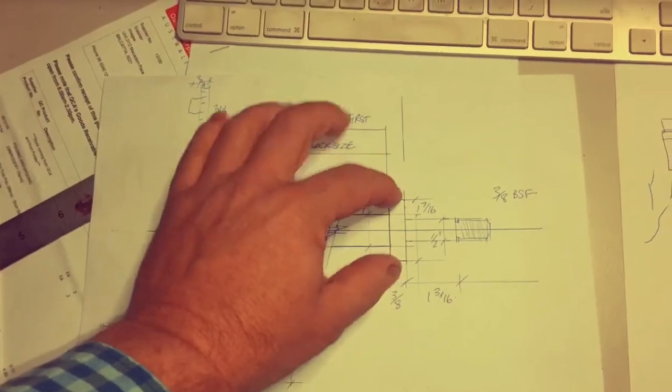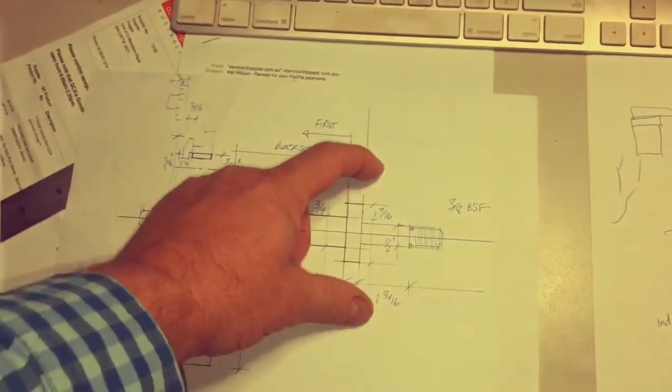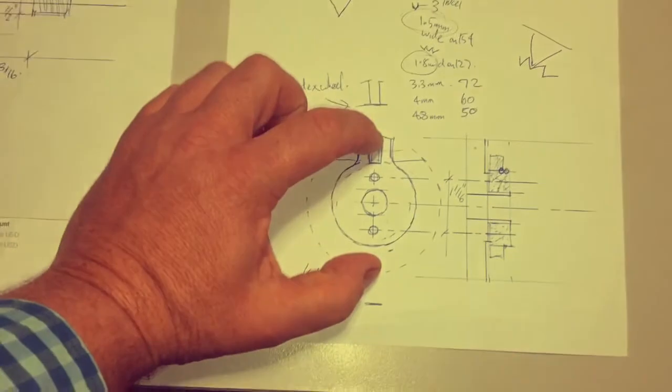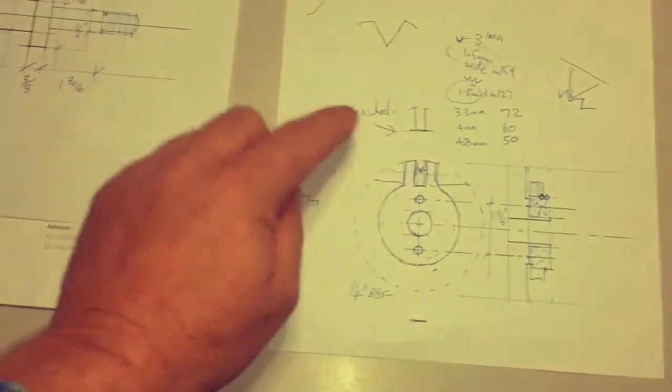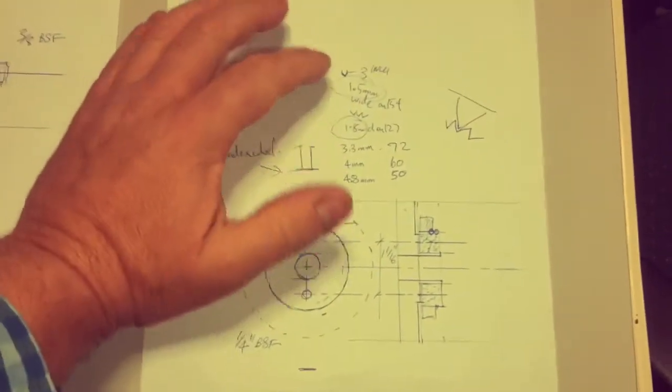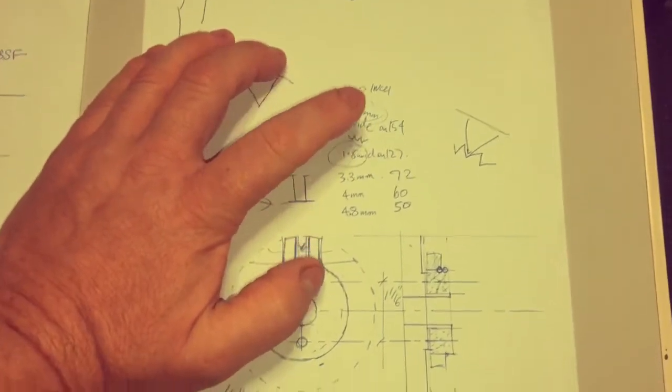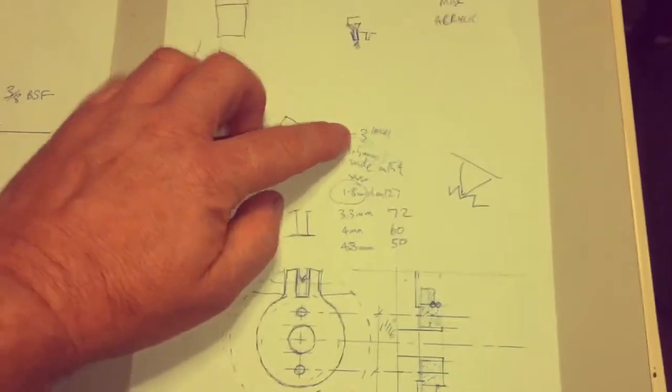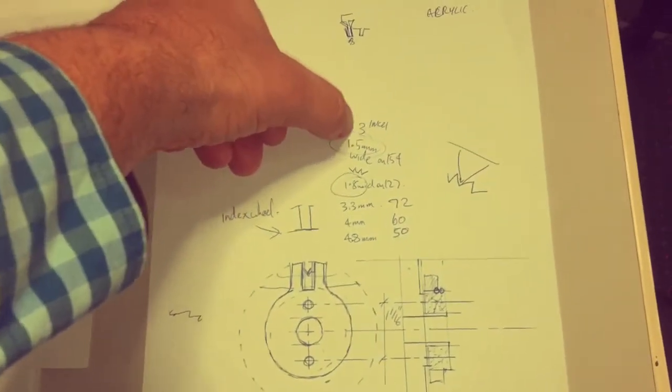We've got the end cap here which is bolted on to our index wheel. Then we have the index tooth arrangement which locks into the index wheel and based on the 154 tooth gear that we're trying to do, we're looking at probably trying to make the index wheel about three inches in diameter.